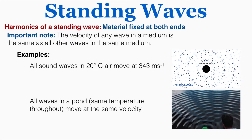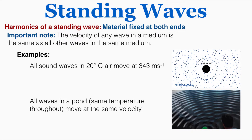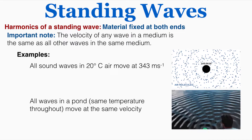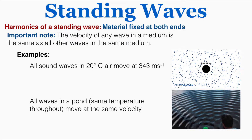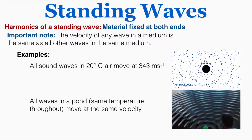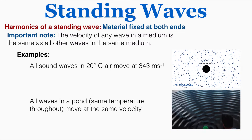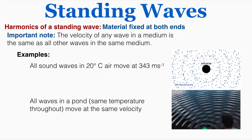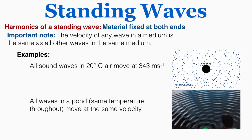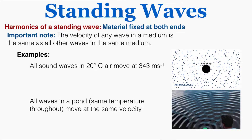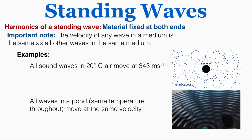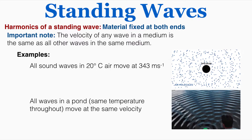This is always a little bit surprising to students when they first find it out, but it is true. For example, all sound waves in 20 degrees Celsius air move at 343 meters per second. All waves in a pond with the same temperature throughout move at the same velocity. So if you have the same medium, the same type of wave will move through it at the same velocity as all other waves in that medium. This is going to be really important for the harmonics of standing waves.